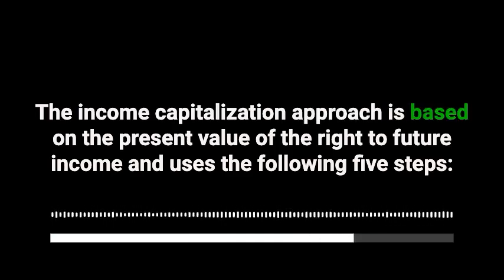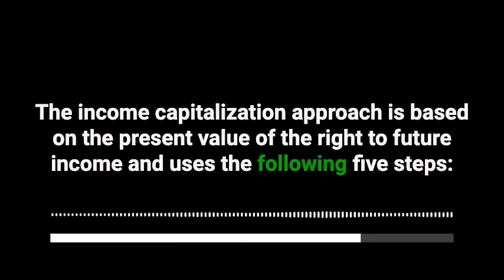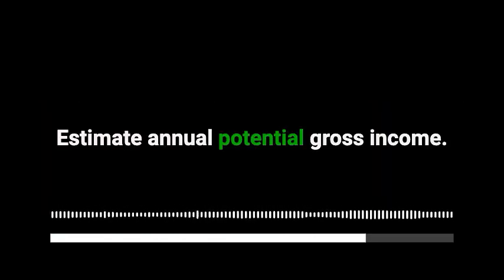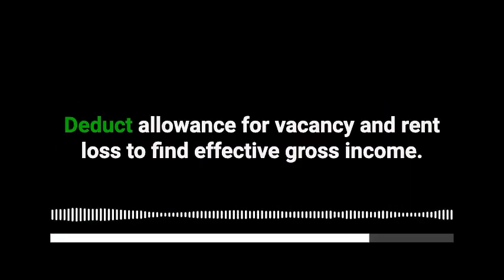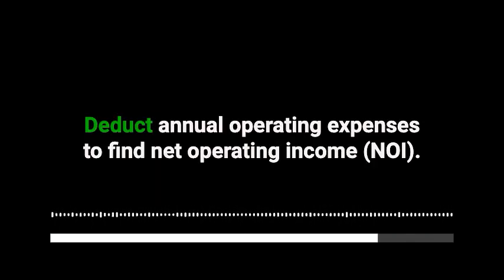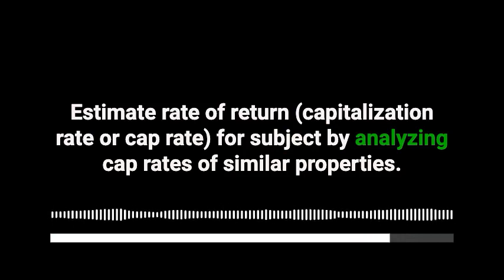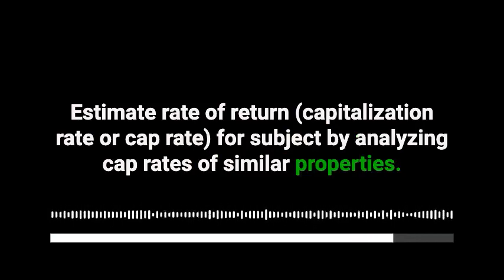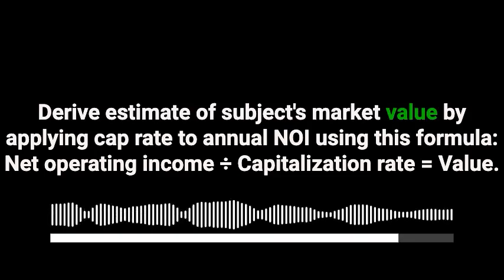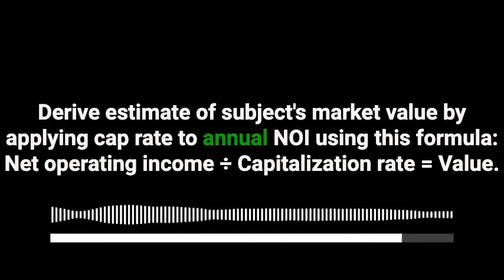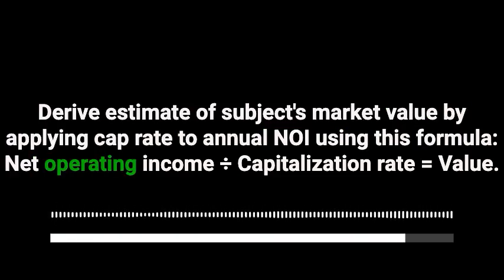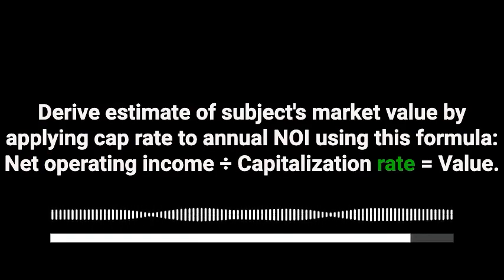The income capitalization approach is based on the present value of the right to future income and uses five steps: 1. Estimate annual potential gross income. 2. Deduct allowance for vacancy and rent loss to find effective gross income. 3. Deduct annual operating expenses to find net operating income. 4. Estimate rate of return for the subject by analyzing cap rates of similar properties. 5. Derive an estimate of the subject's market value by applying the cap rate to annual NOI using the formula: net operating income divided by capitalization rate equals value.